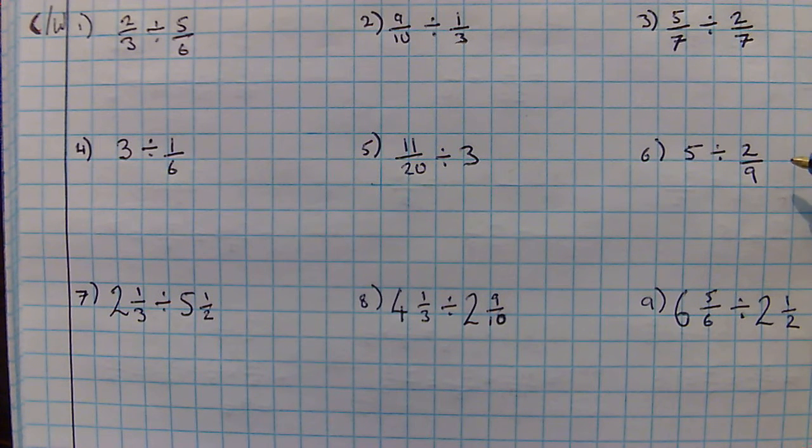For the second lot, remember whole numbers are going to need to be written as fractions out of 1. If your answer ends up with a fraction out of 1, change it back to a whole number.